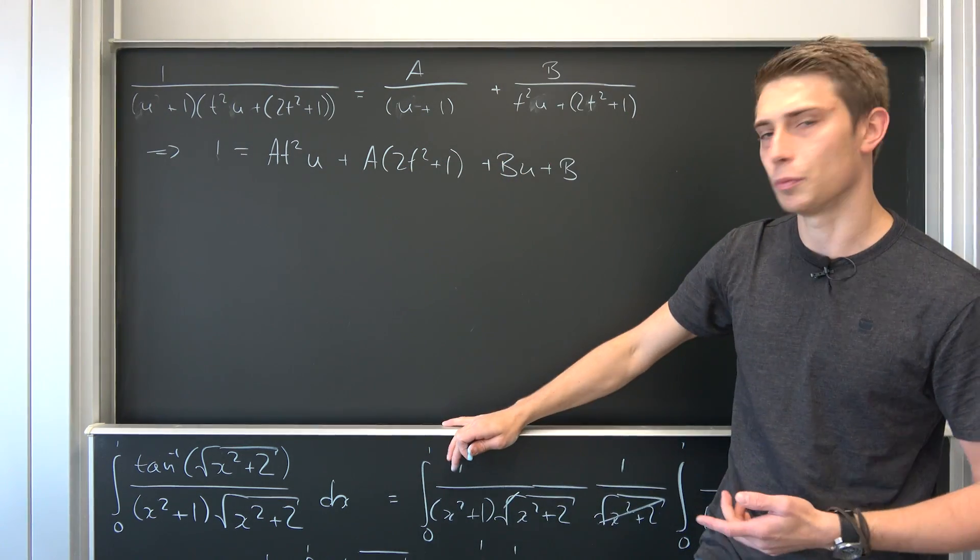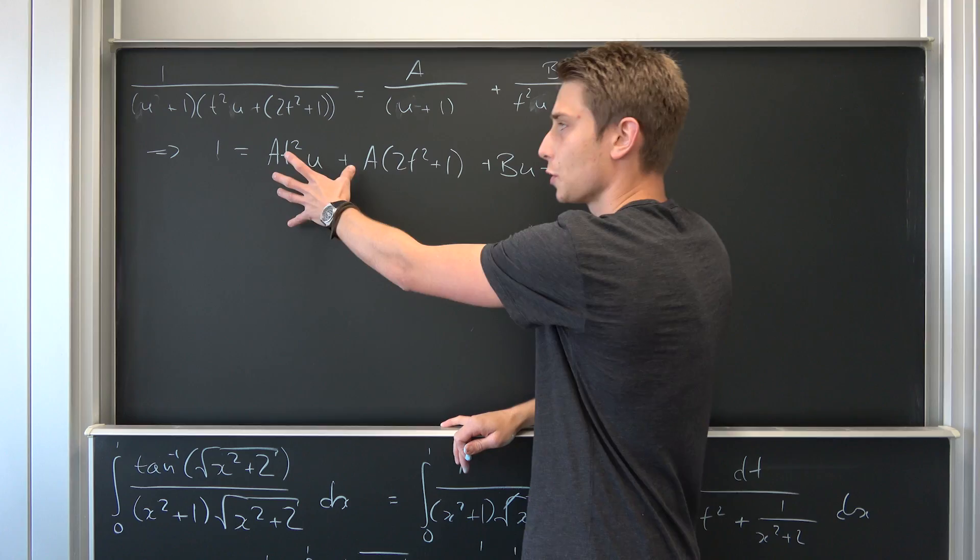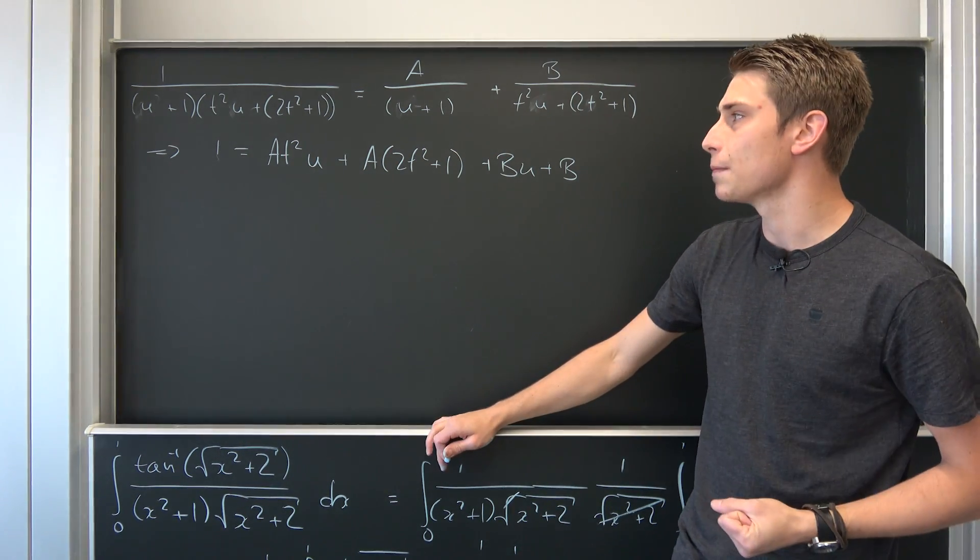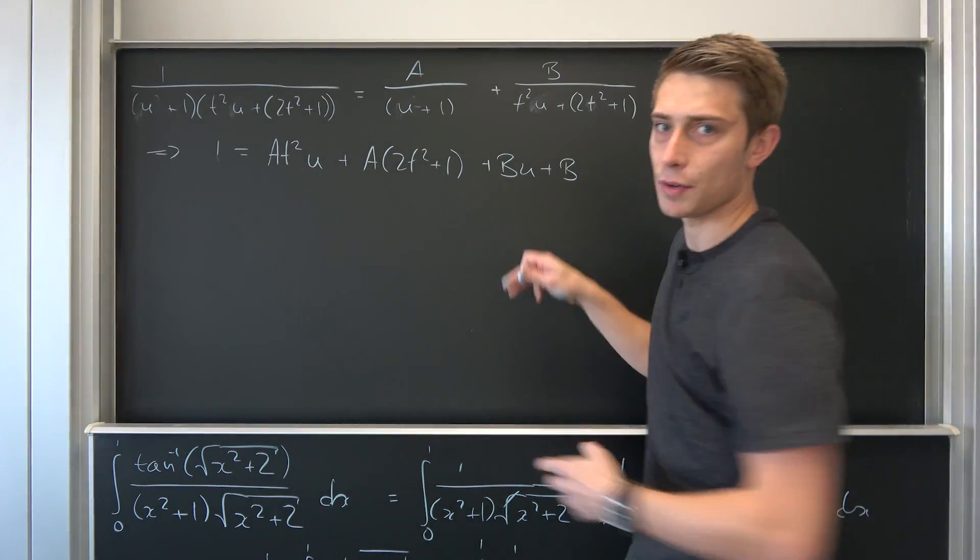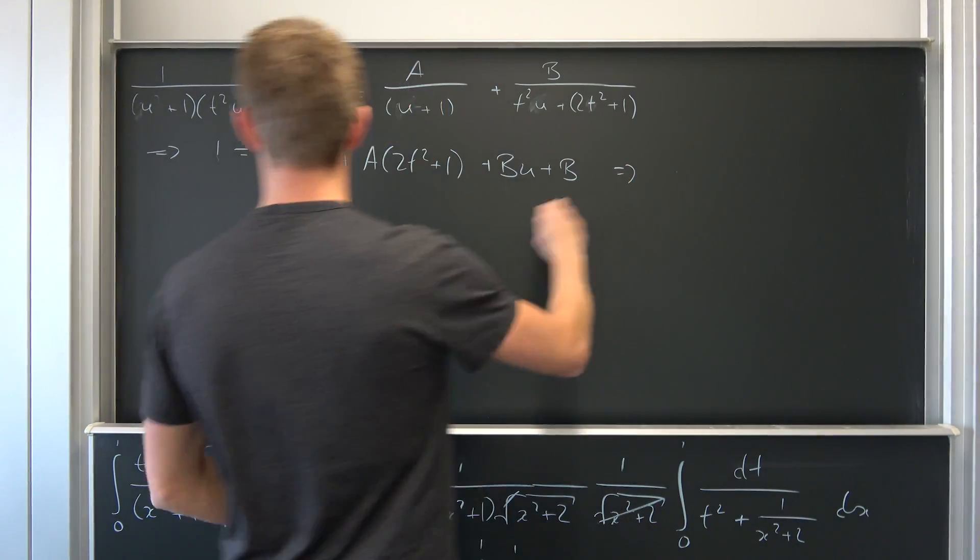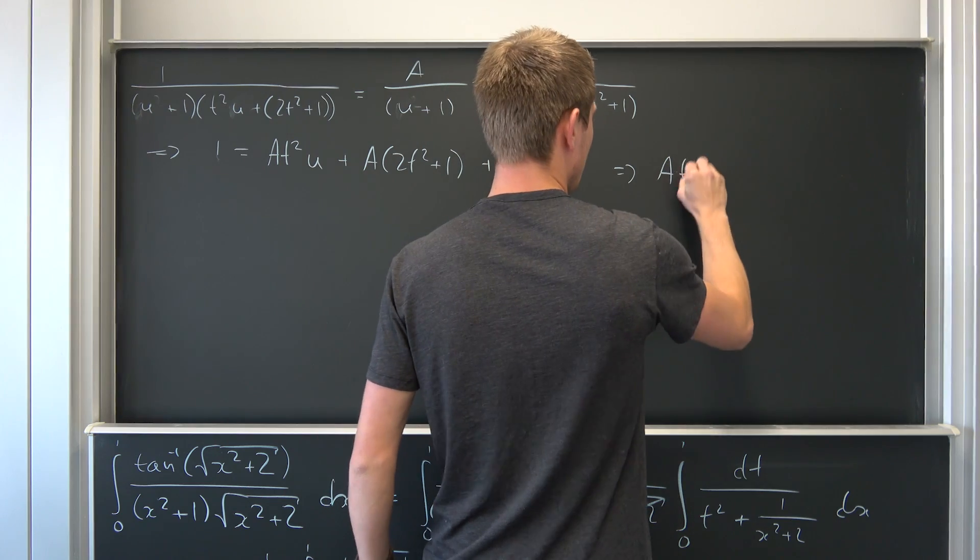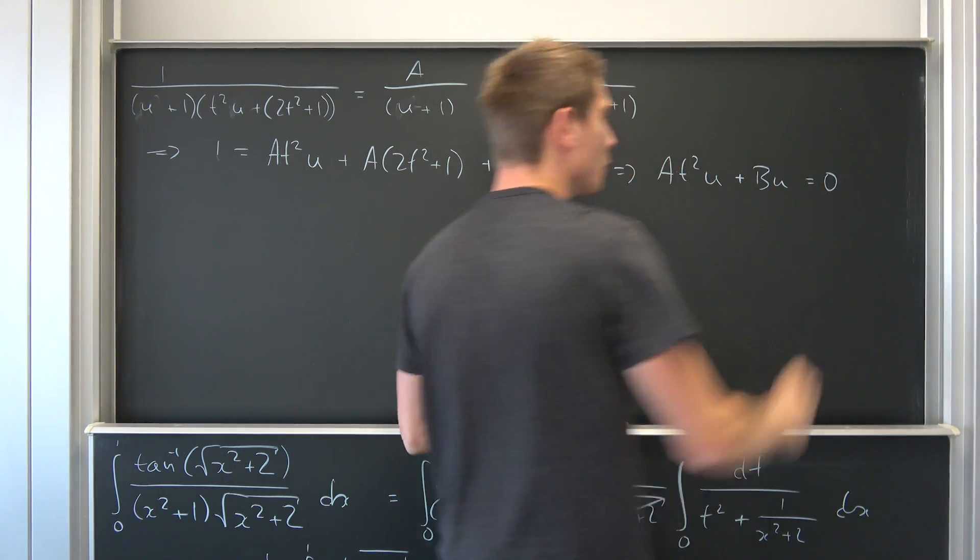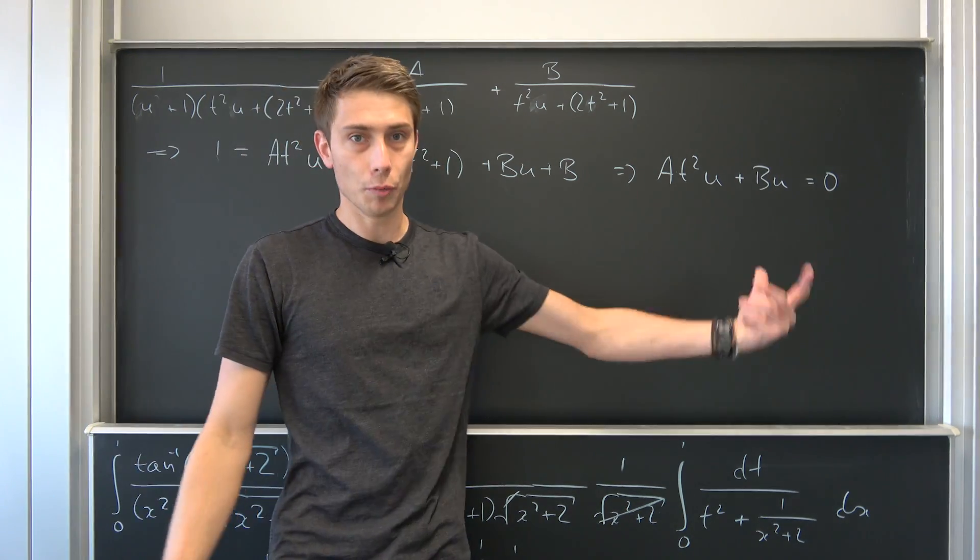First-degree polynomial in u. So we have to get rid of all the terms that have this first-degree polynomial stuff in there. So that means we have to set those two added together being equal to zero. So this just implies that A t squared times u plus B times u must be equal to zero.